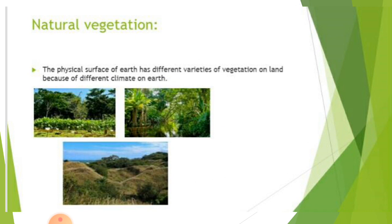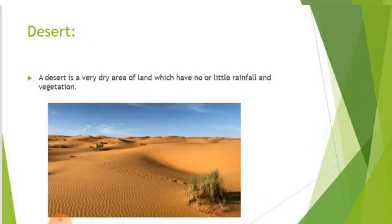Natural vegetation: the physical surface of the earth has different vegetation like deserts, forests, grasslands, shrublands, and tundras. This is because of climate and variety of soil. You can see that deserts have different vegetation to forests, and tundras have different vegetation to grasslands.